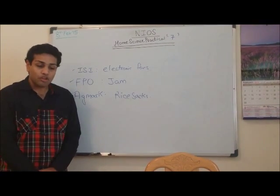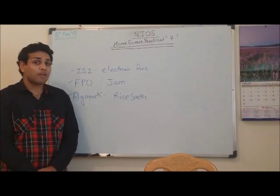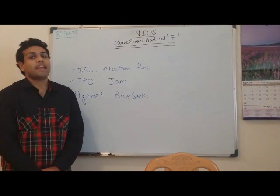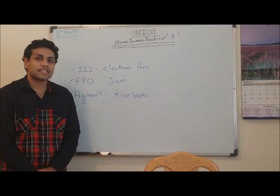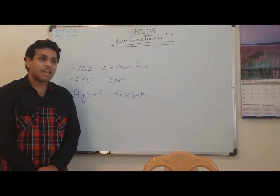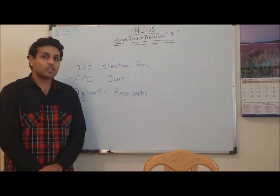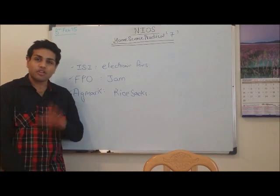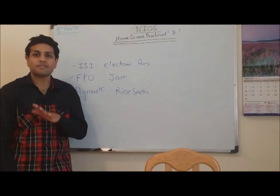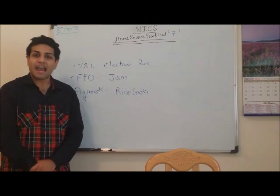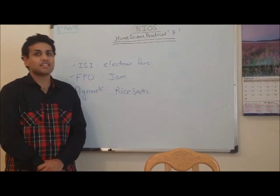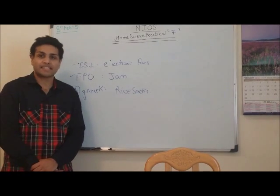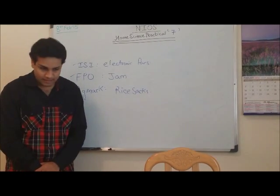Why is it important to write the date of manufacturing and expiry? Every product has a shelf life. It is important so that food or eatable items do not expire, and if they do expire, they are not sold to people, as consuming expired products can make you sick.